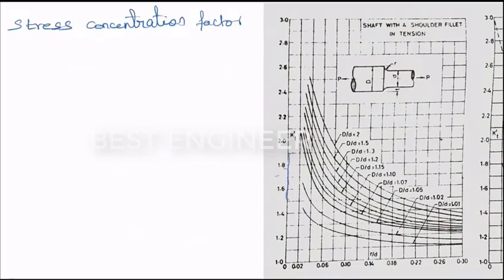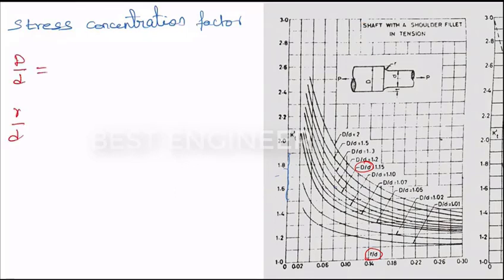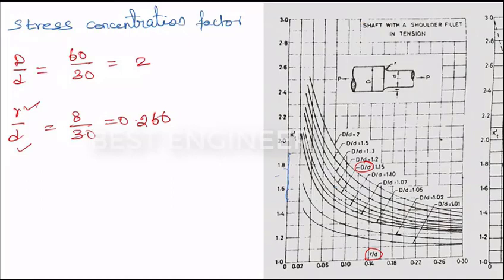Let's find the stress concentration factor. For that, we need to find the ratios r/d and D/d. The maximum diameter divided by minimum diameter is 60 divided by 30, which gives 2. The radius of fillet to minimum diameter is 8 divided by 30, which equals 0.266. Using these ratios on the chart — D/d equals 2 and r/d equals 0.266 — extending the line horizontally, it meets at 1.4, which is the stress concentration factor kt.